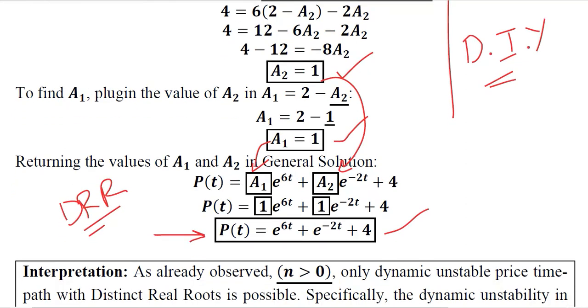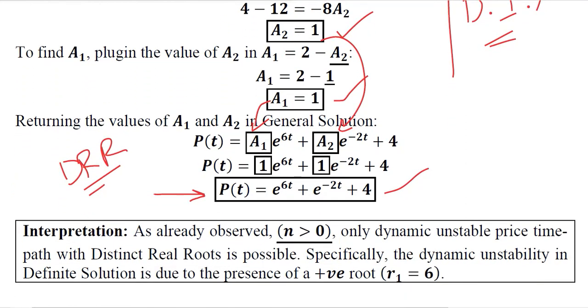We can write the interpretation here. Since n is greater than 0, dynamic stability will be absent and the only possibility is that A1 becomes 0, which in this case it is not, it is equal to 1. So dynamic stability cannot be possible with this positive root here that is 6, and that's why there will be dynamic instability in this definite solution.